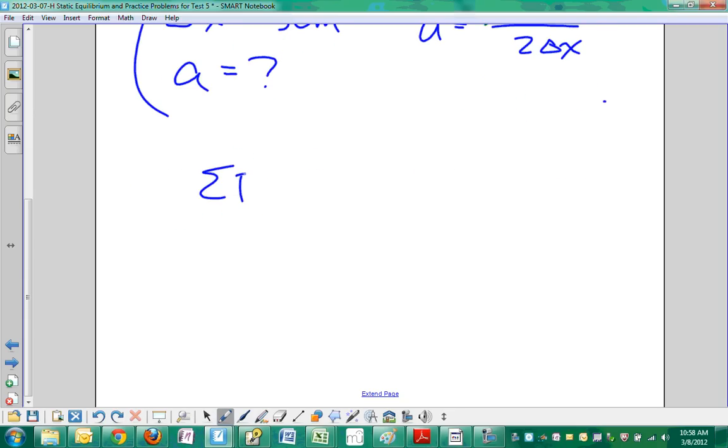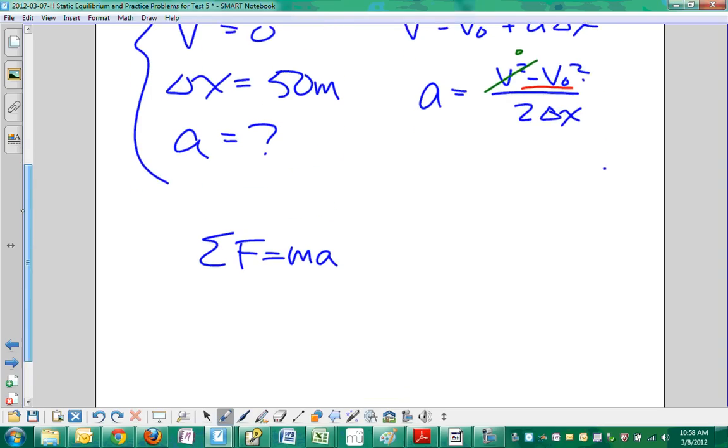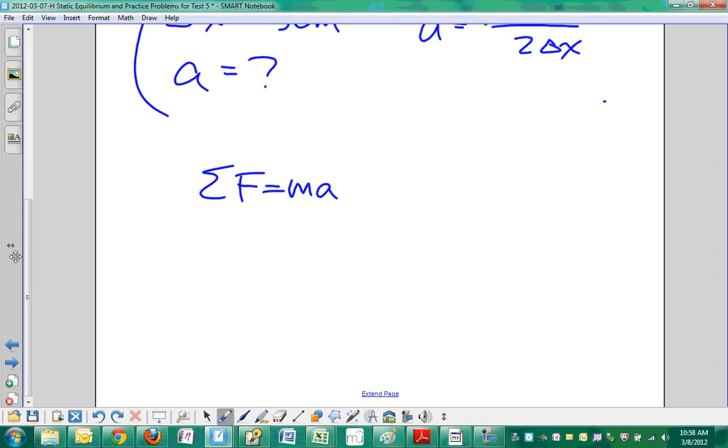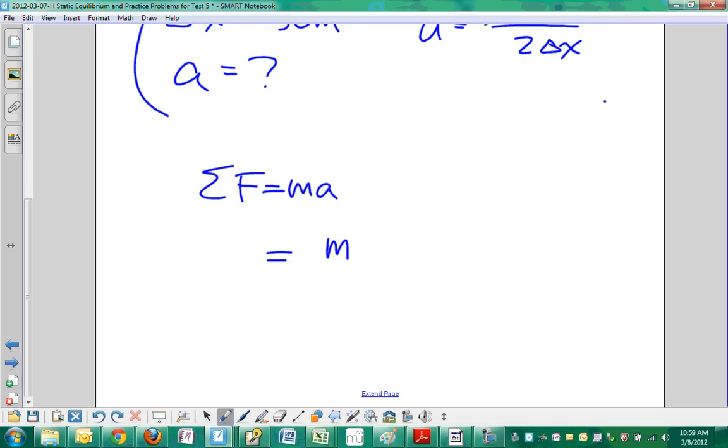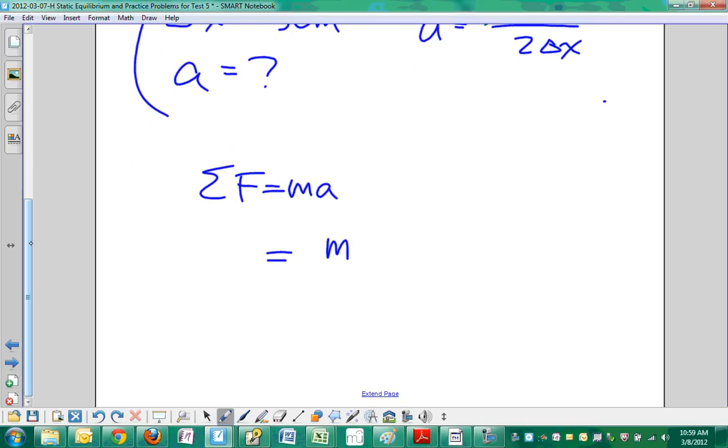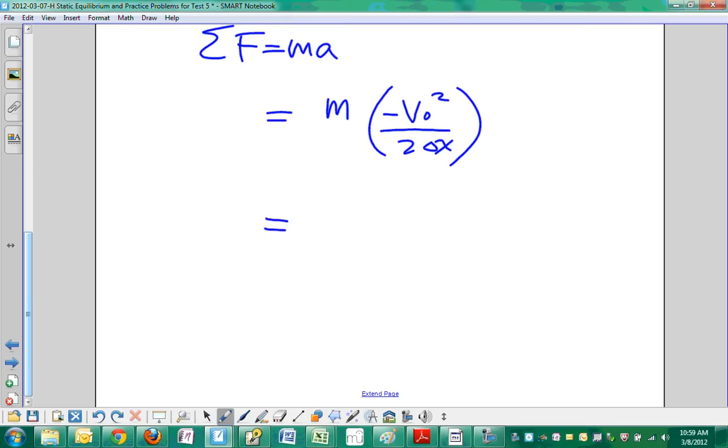Net force equals ma. Instead of calculating intermediate values, let's substitute a as an algebraic expression: m times negative v₀² over 2Δx. This simplifies to negative m v₀² over 2Δx.